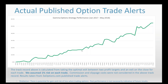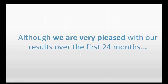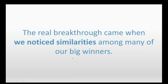This is what it looks like on a graph — fairly consistent. We had down weeks and down months, as you would expect with most trading strategies, but overall the results are pretty good. The real breakthrough came when we noticed a number of similarities amongst some of our big winning trades.